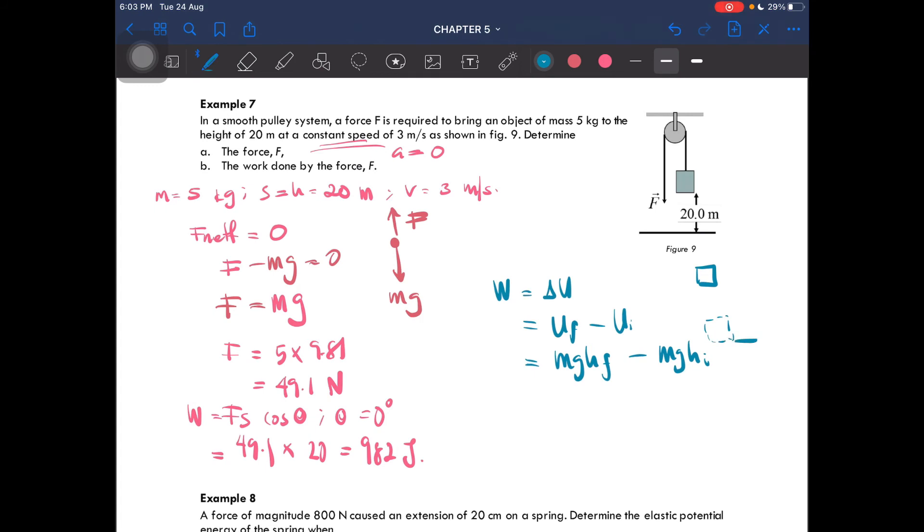Let me draw it. It starts from here where h initial is equal to zero meters, and they go up until this level, h final, which is equal to 20 meters. So this is 5 times 9.81, h final is 20 minus zero, then you'll get work done to be equal to 982 joules.